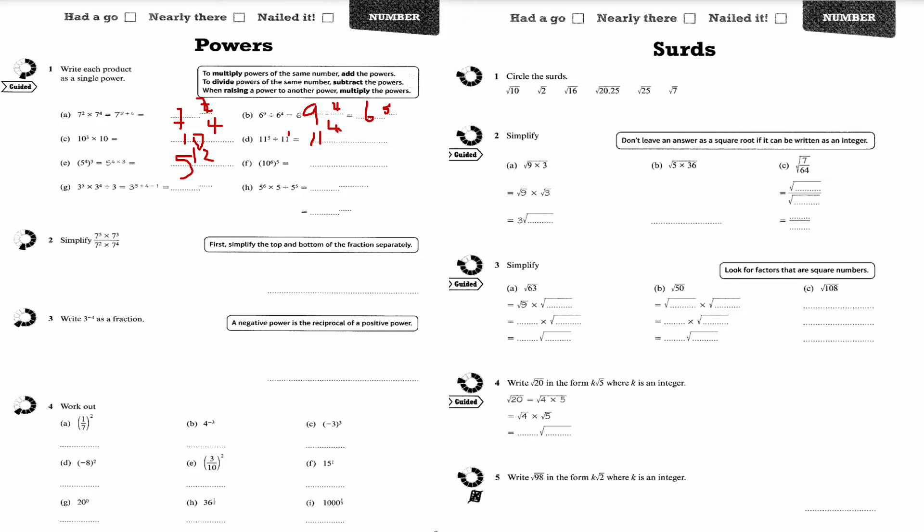Part F, 10 to the 6 always to the power of 5. We're going to multiply the powers. 6 times 5 is 30.